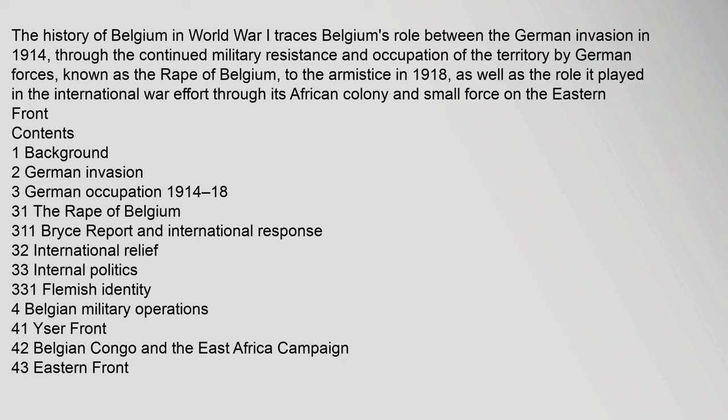The history of Belgium in World War I traces Belgium's role between the German invasion in 1914, through the continued military resistance and occupation of the territory by German forces, known as the Rape of Belgium, to the Armistice in 1918, as well as the role it played in the international war effort through its African colony and small force on the Eastern Front.